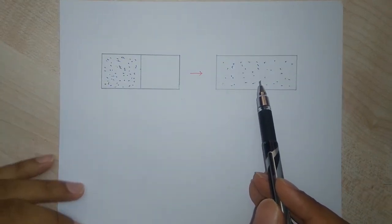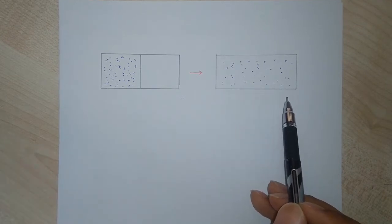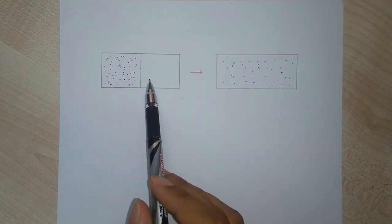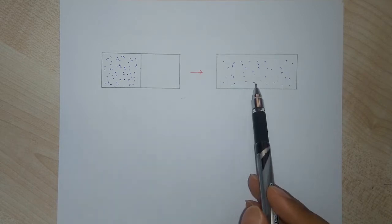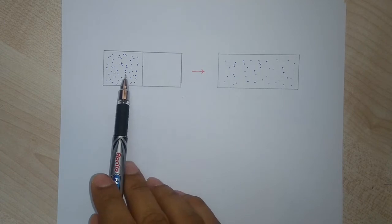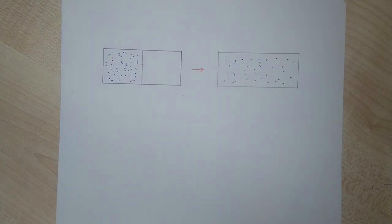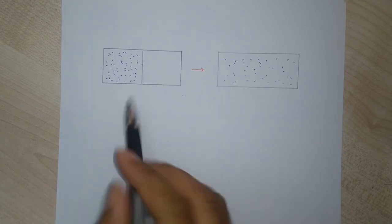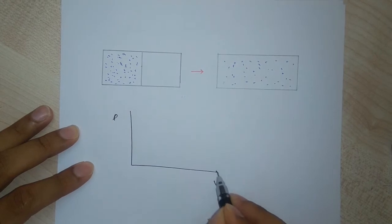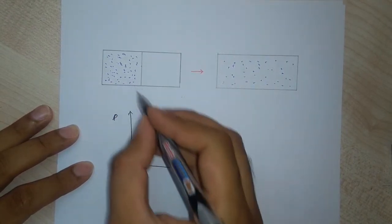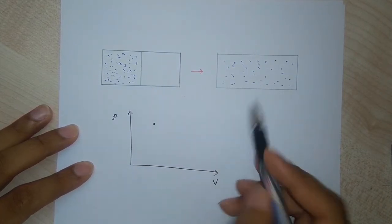This process is irreversible — we'll never see the expanded gas spontaneously compress back. In free expansion, the vacuum exerts no opposing force, so the gas does no work. Therefore the internal energy doesn't change, meaning the temperature of the system remains constant. On the PV diagram, state one is at higher pressure and state two is at lower pressure and larger volume.